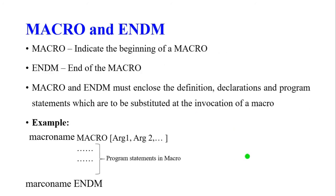The MACRO and ENDM directives define a macro, which is a very small sub-program. MACRO indicates the beginning of the macro definition and ENDM marks its end. A macro must enclose definition declarations and program statements that are substituted at the point of invocation — the macro is called from the main program using the macro name.